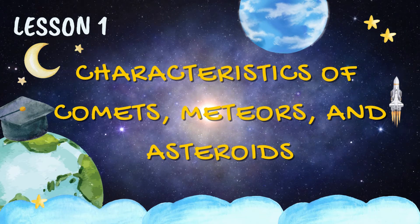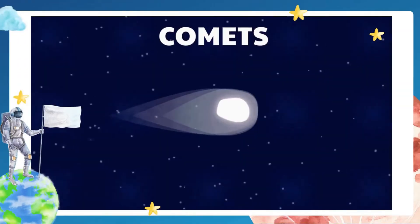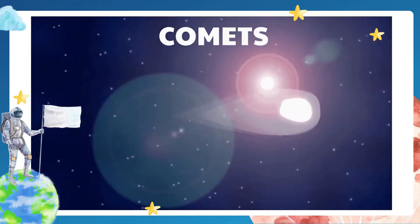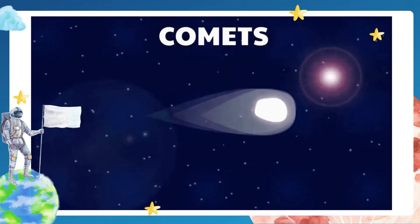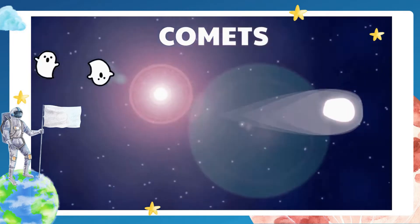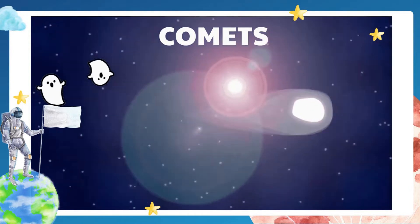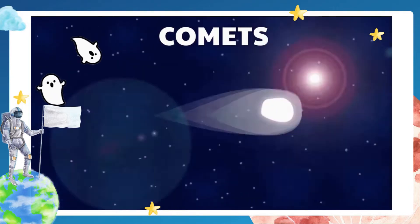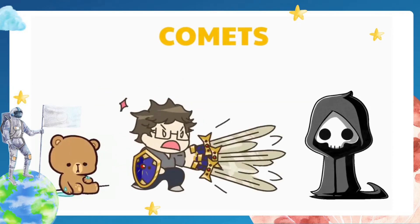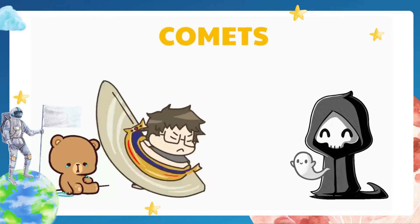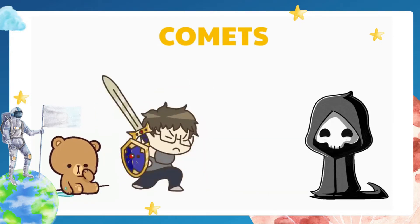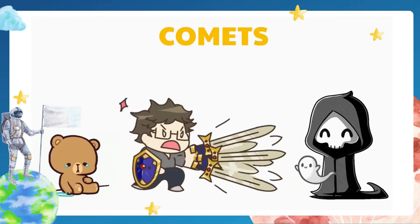Let us talk first about comets. Ever since people have known about comets, if you ask your grandparents, they will tell you some superstitions about comets bringing bad luck. There are those who believe that comets were bad spirits, that they look like a girl with a head and long hair behind. To others, a comet looks like a sword, and is believed to be an indication of war, death, and famine.